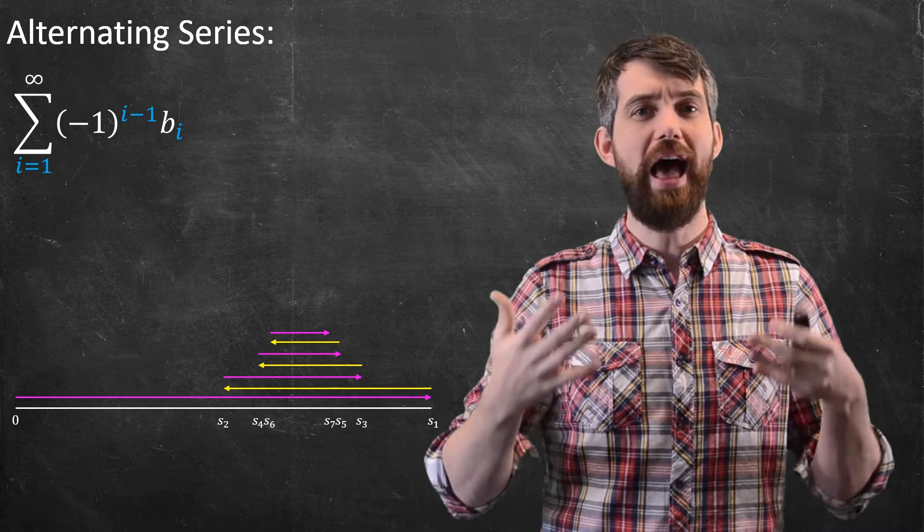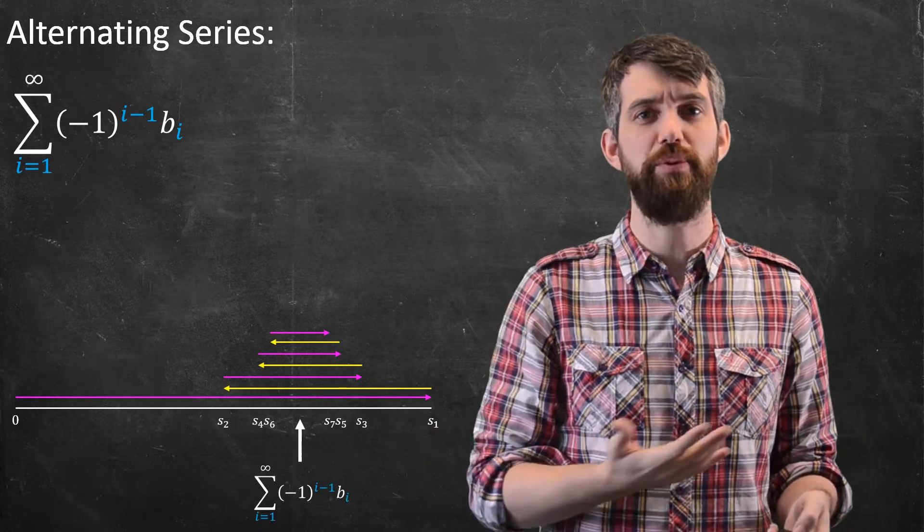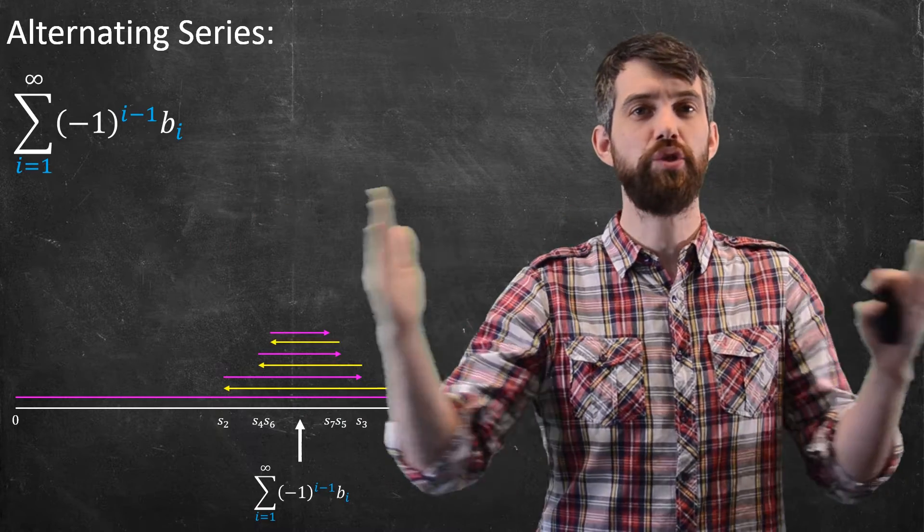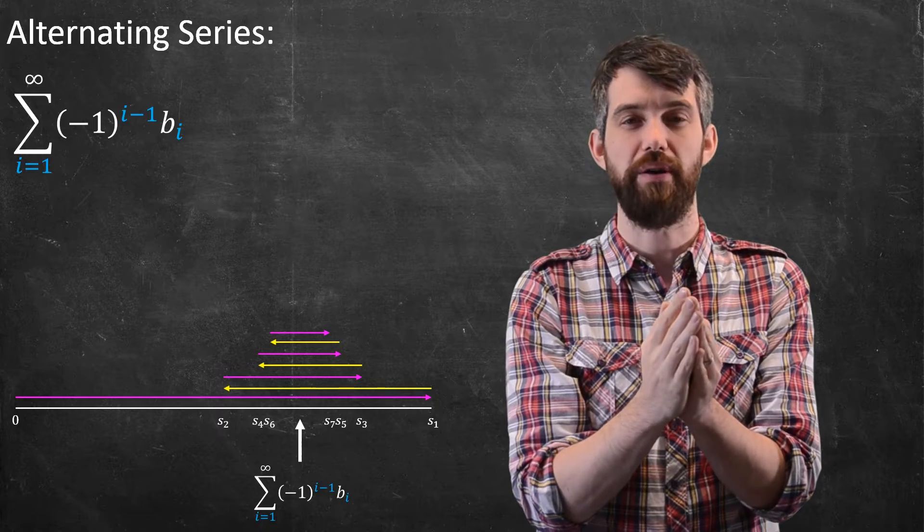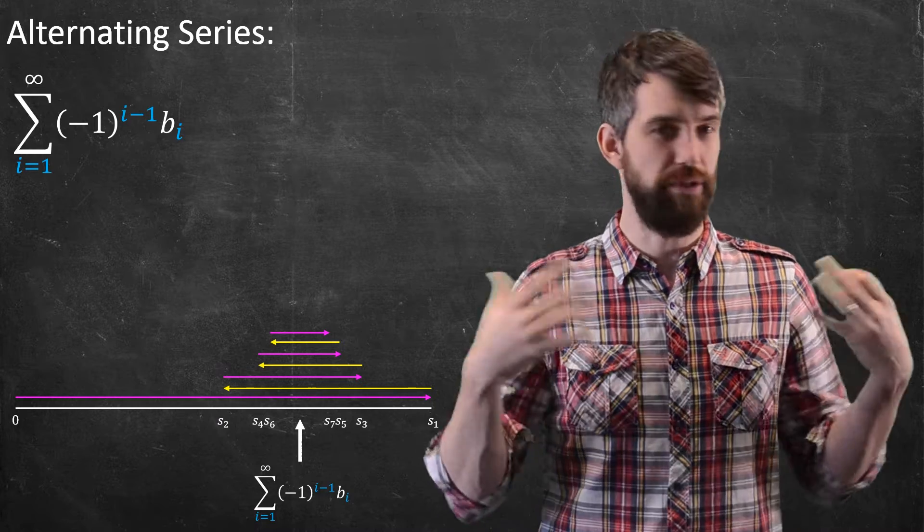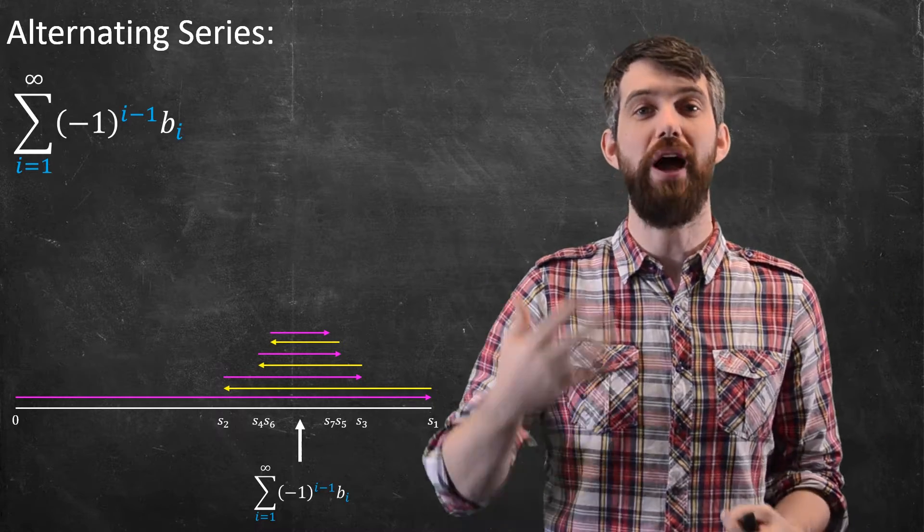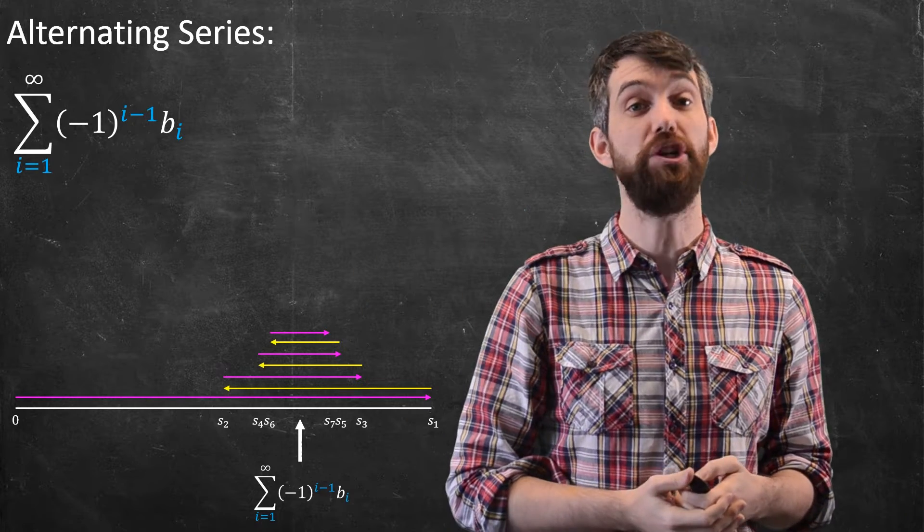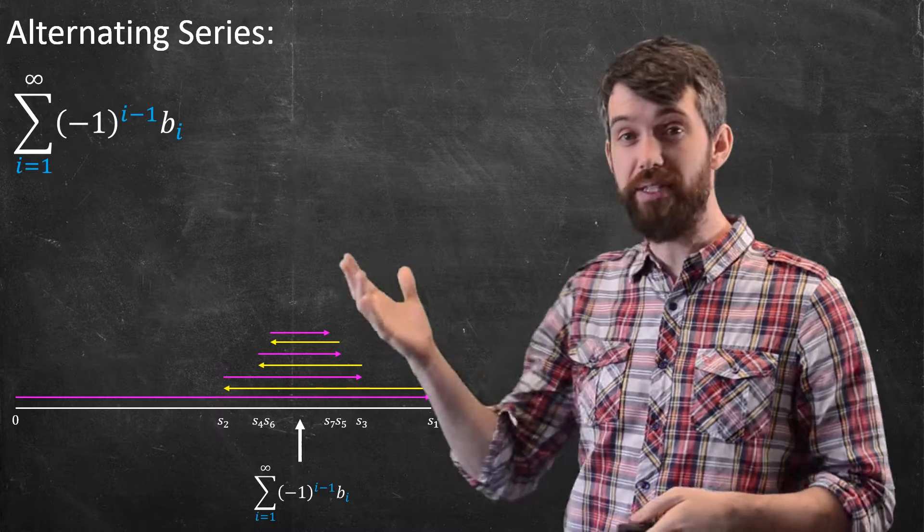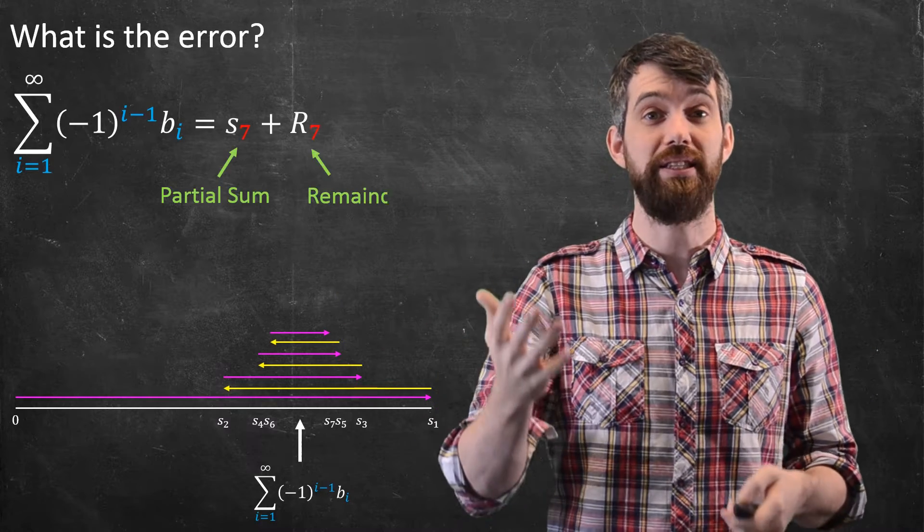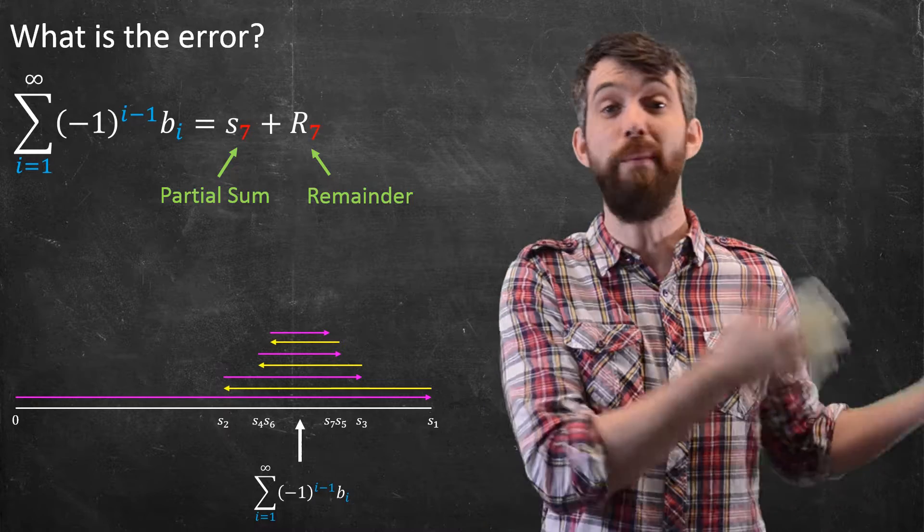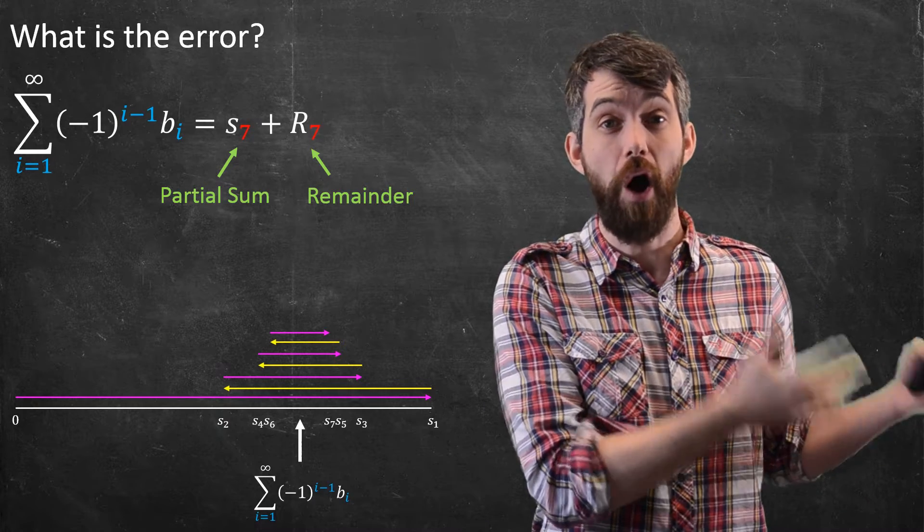And then we concluded that the actual sum of the series was going to converge in this kind of case, and it was somewhere in the middle, squashed between this alternating behavior. Let me suppose I've done that, and I want to estimate this by perhaps only the first seven terms. That is, I have this series, and I want to write it as the sum of a partial sum s7 and some remainder, some error term r7.